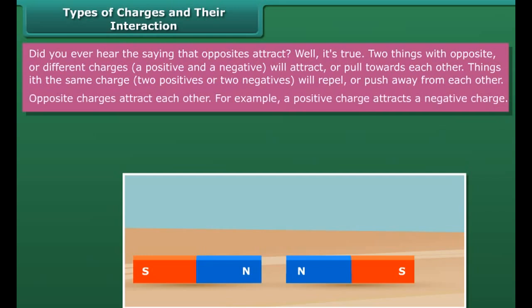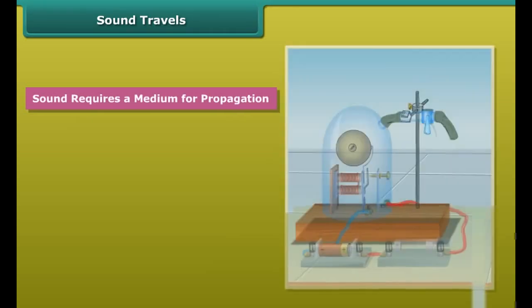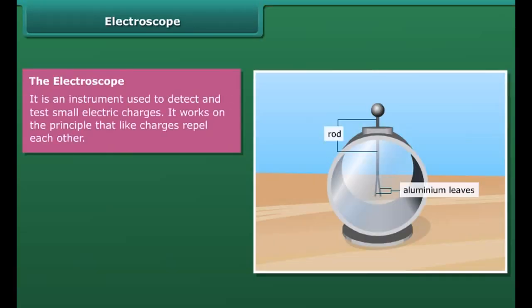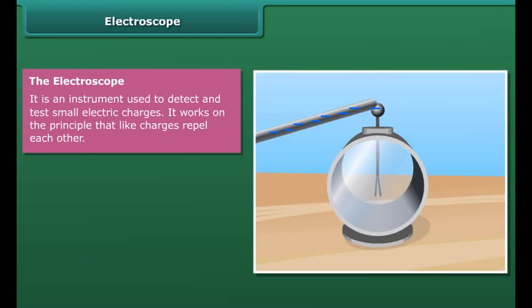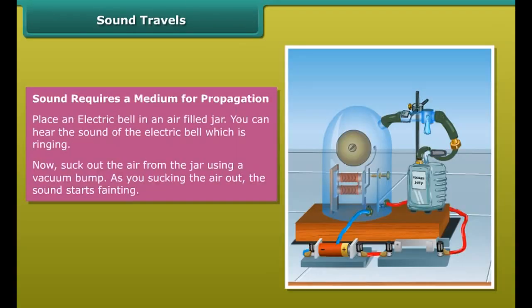Types of charges and their interaction: did you ever hear the saying that opposites attract? It's true — two things with opposite or different charges, a positive and a negative, will attract or pull towards each other. Things with the same charge — two positives or two negatives — will repel or push away from each other. Opposite charges attract each other; for example, a positive charge attracts a negative charge. Like charges repel each other.